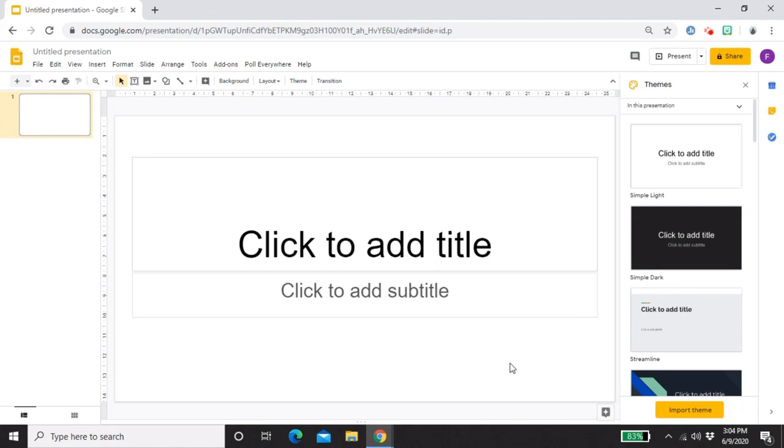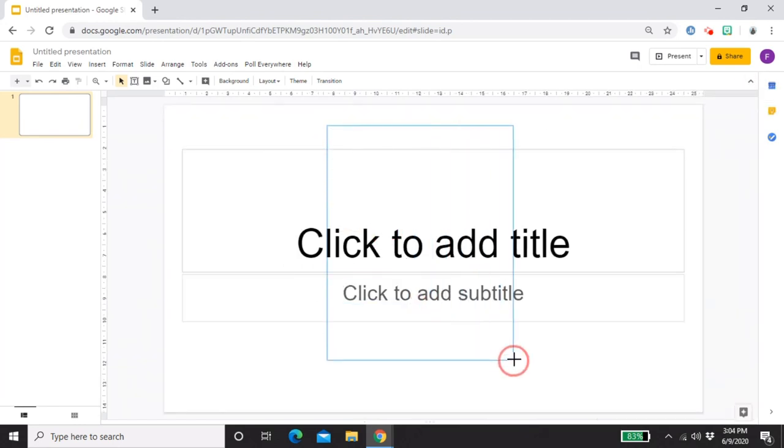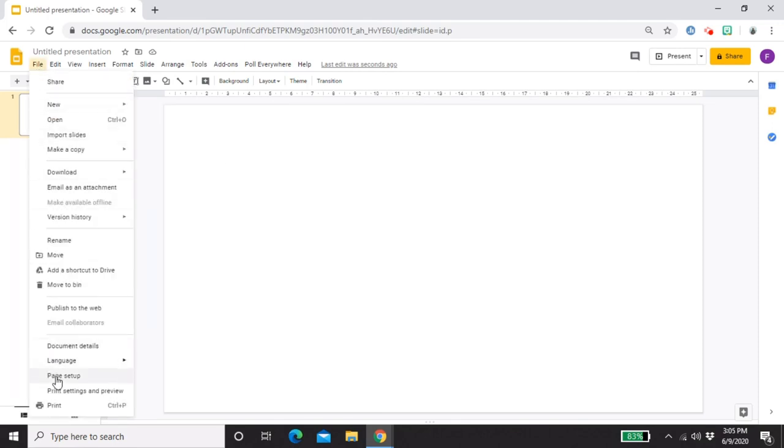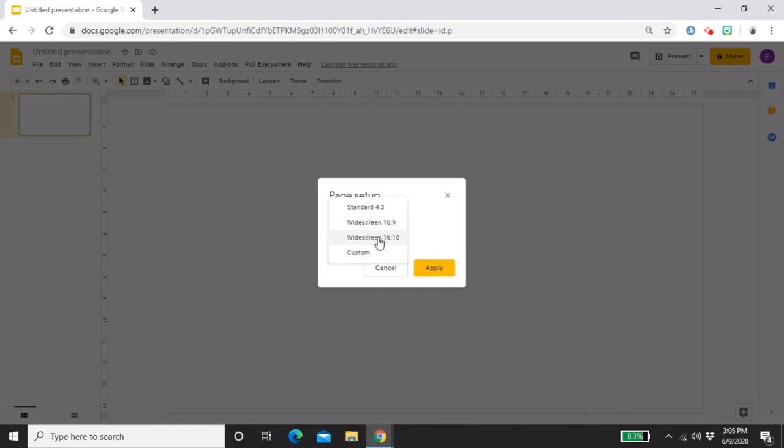Hey guys, so we are currently here in a blank canvas of Google Slides. I'll close the theme tab and delete all the text boxes on the slide. After that, I'll resize to 13 by 8.5 to fit a long bond paper. To do that, go to File, Page Setup, Custom, make sure it's inches, 13 by 8.5, and click apply.